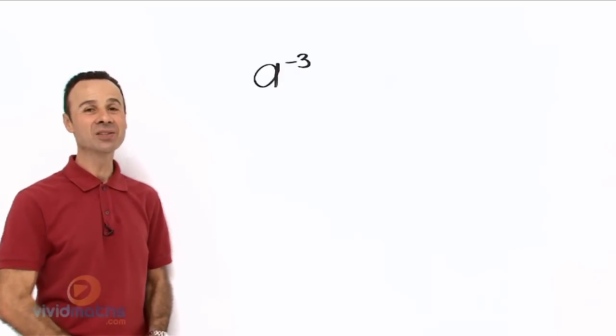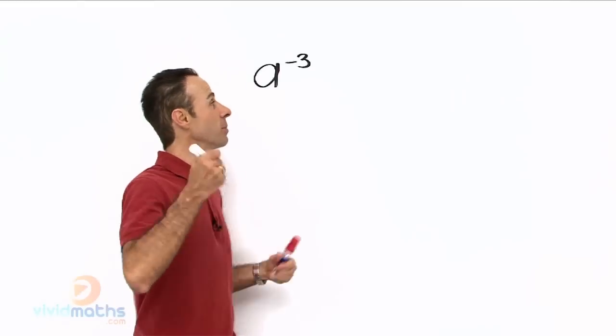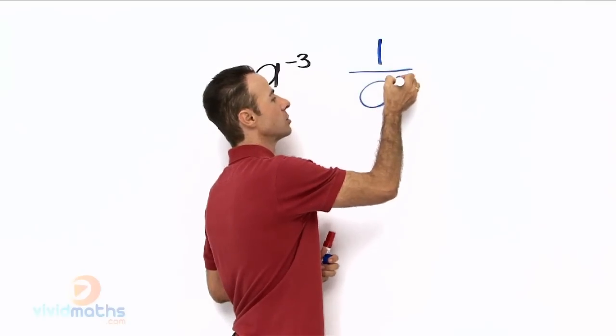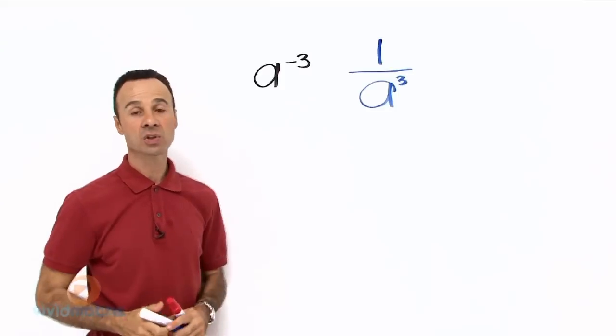So here is the theory: a to the power of minus 3 simply means 1 over a to the positive 3. So what just happened?